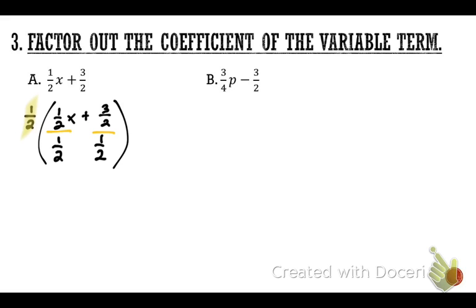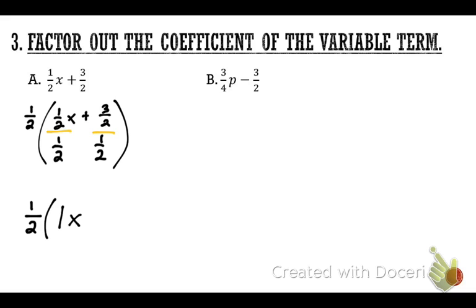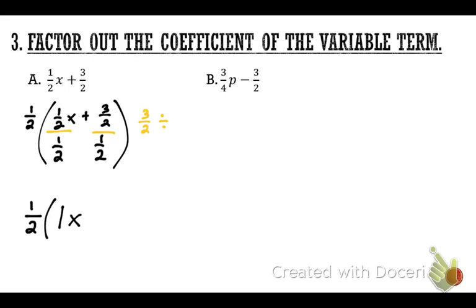Drop the ½ down outside the parentheses. What is ½ divided by ½? Anything divided by itself equals 1, so that's simply 1x — you can leave the 1 or drop it. The next part is 3/2 divided by ½. You're not allowed to divide fractions, so we use the KFC method: keep the first, flip the second, and change the operation.